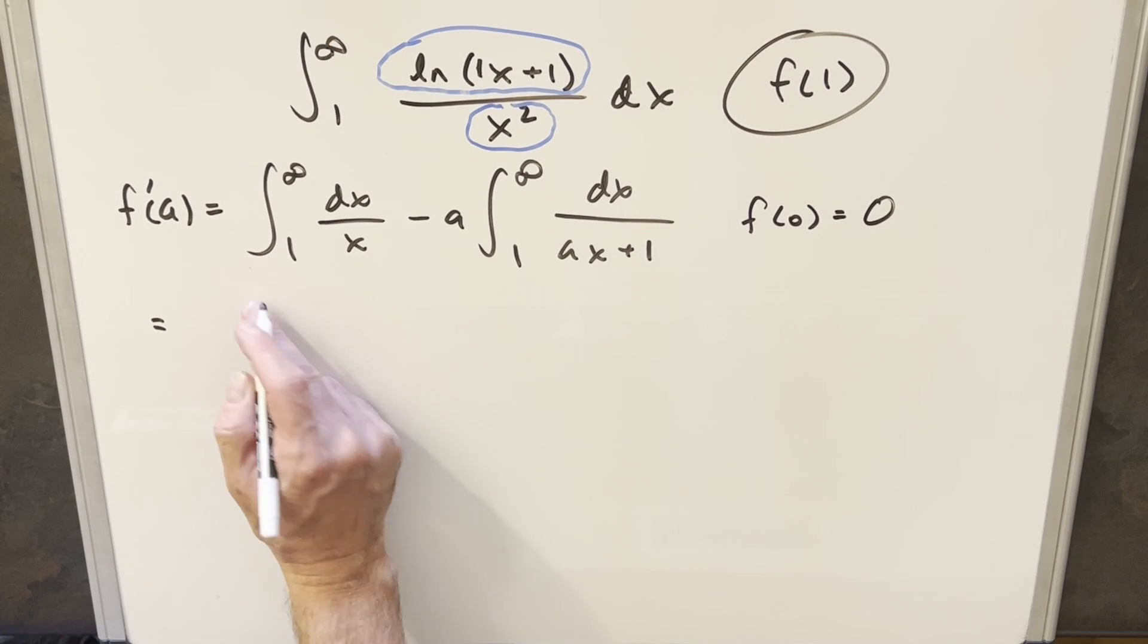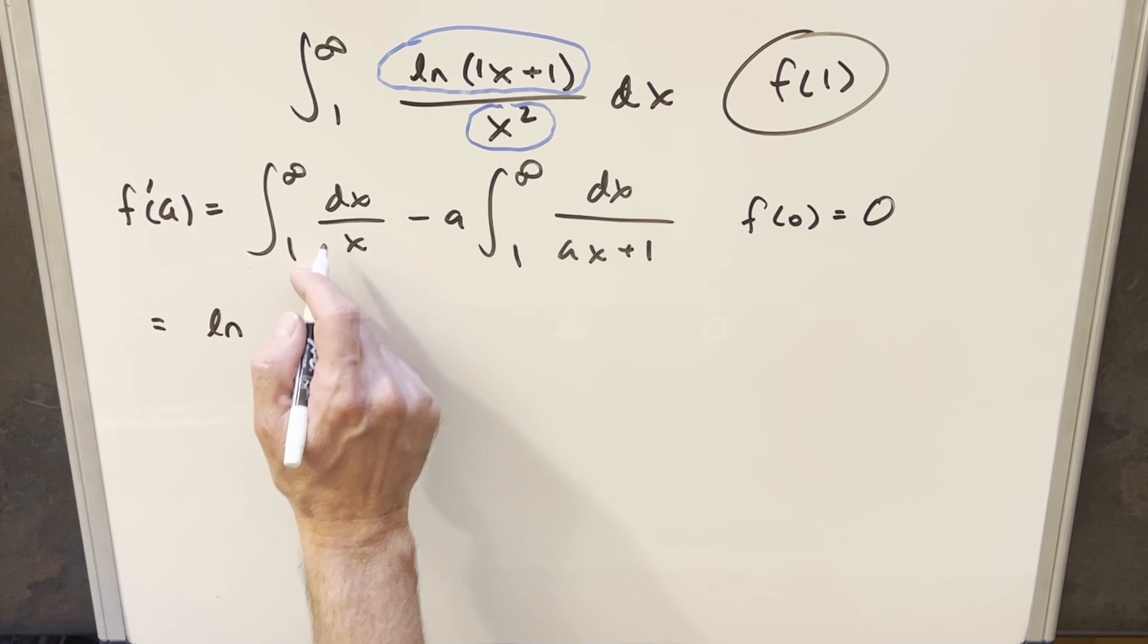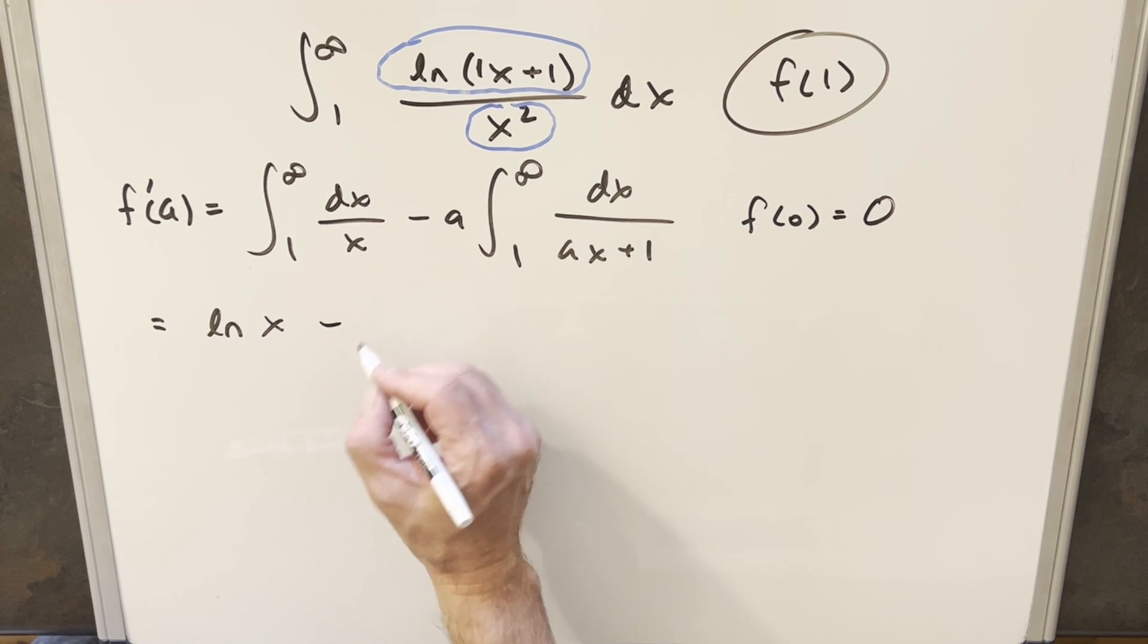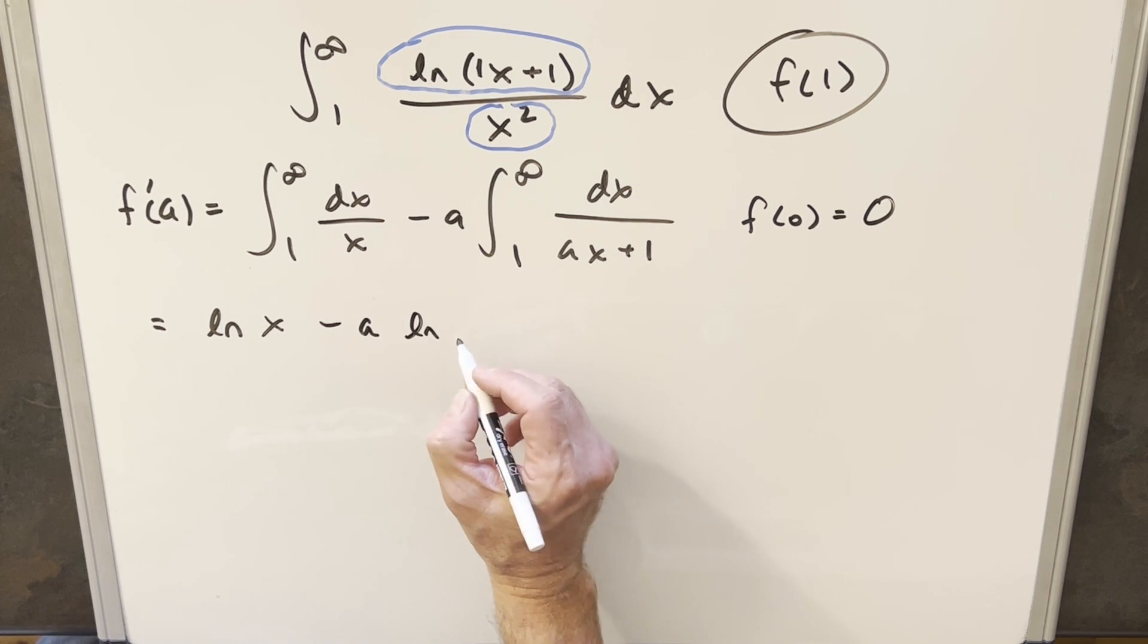And what's left is two pretty easy integrals. So integrating this first one, this is going to become natural log, drop the absolute value because our x values are always positive. So it's just natural log of x. I'm going to evaluate this stuff altogether. Then here, same kind of thing. We're going to have natural log, again drop the absolute value, we'll have ax plus 1.